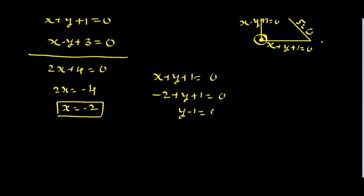Substituting x = -2 in the first equation: -2 + y + 1 = 0, so y = 1. Therefore the orthocentre is (-2, 1).